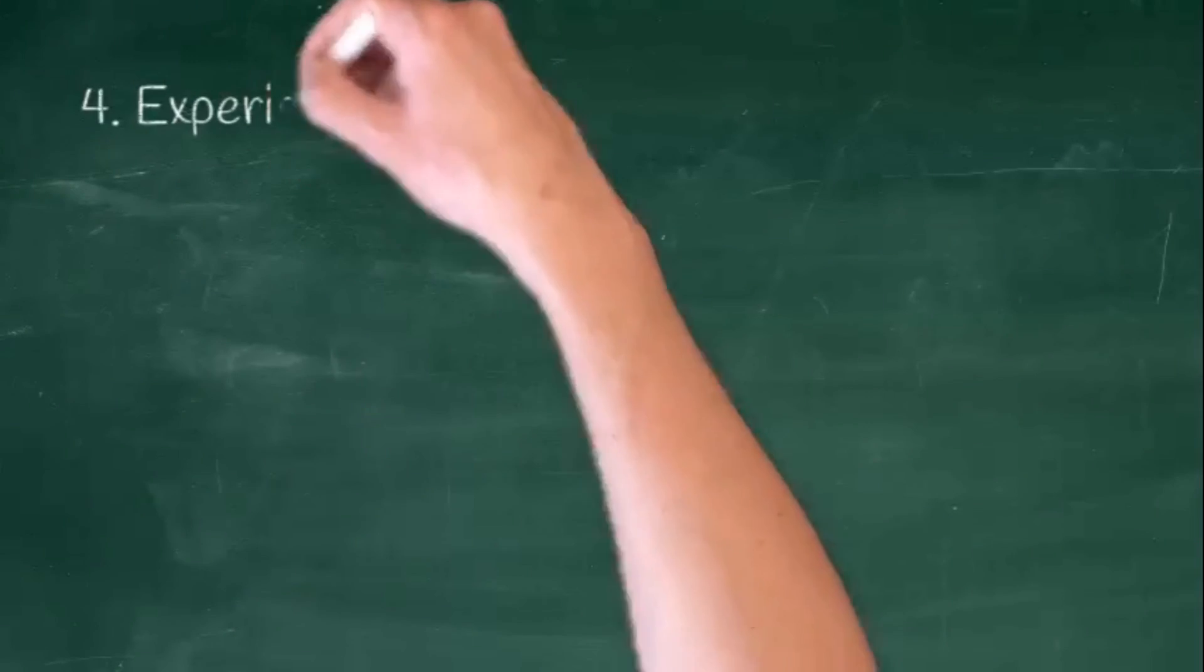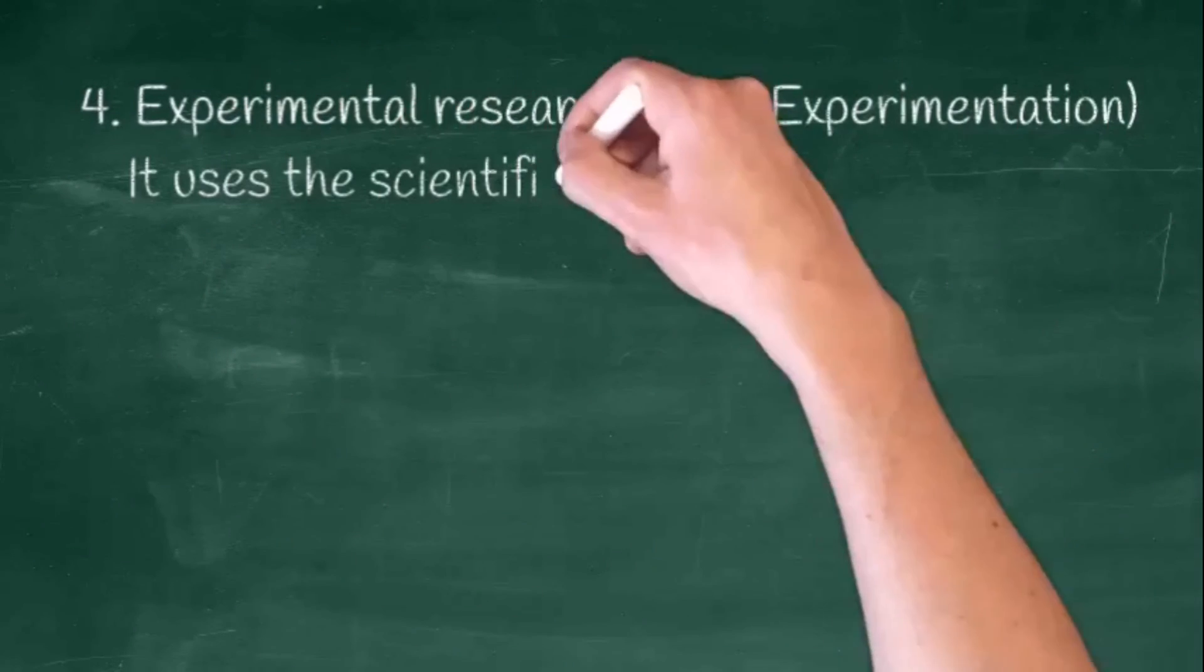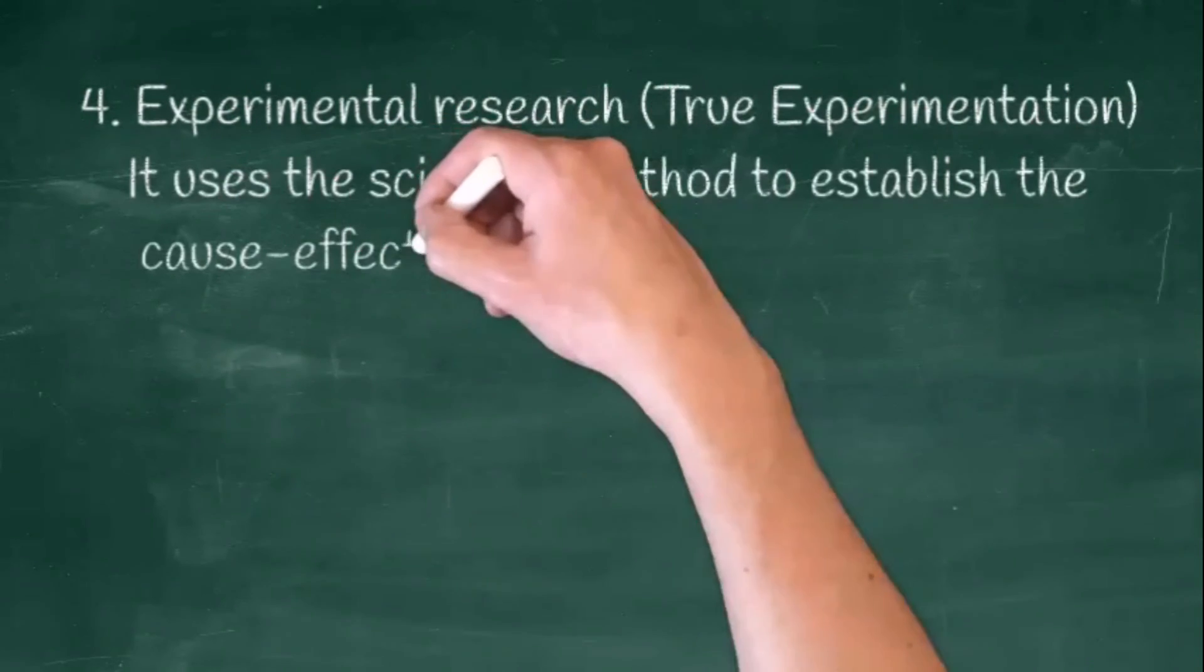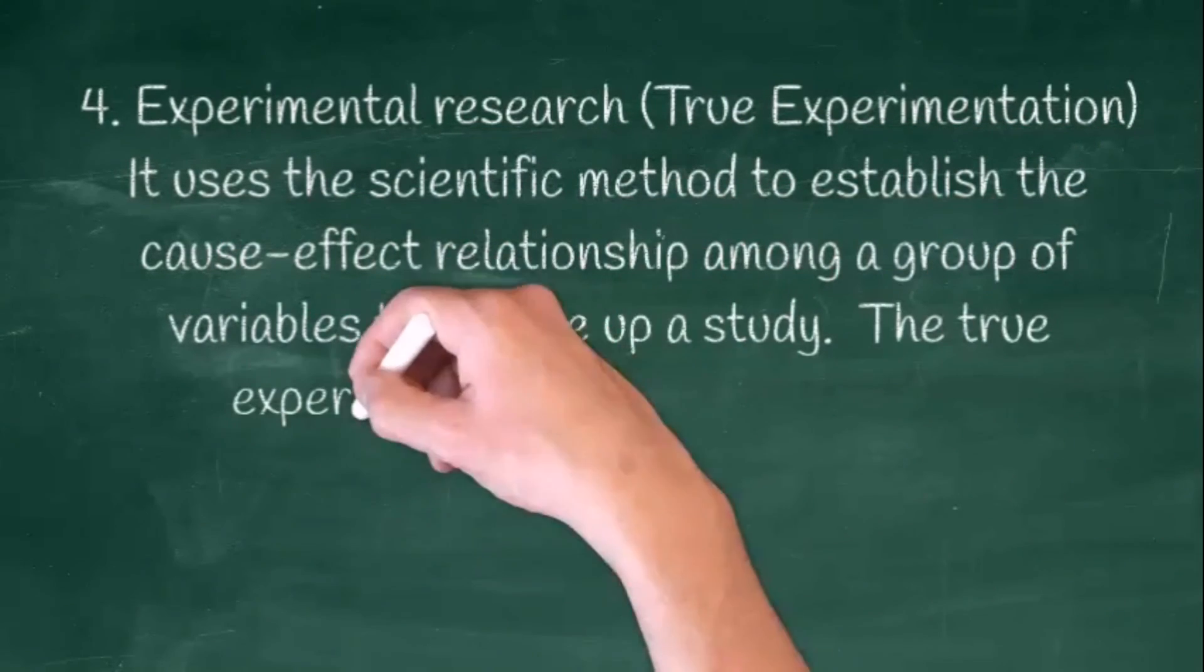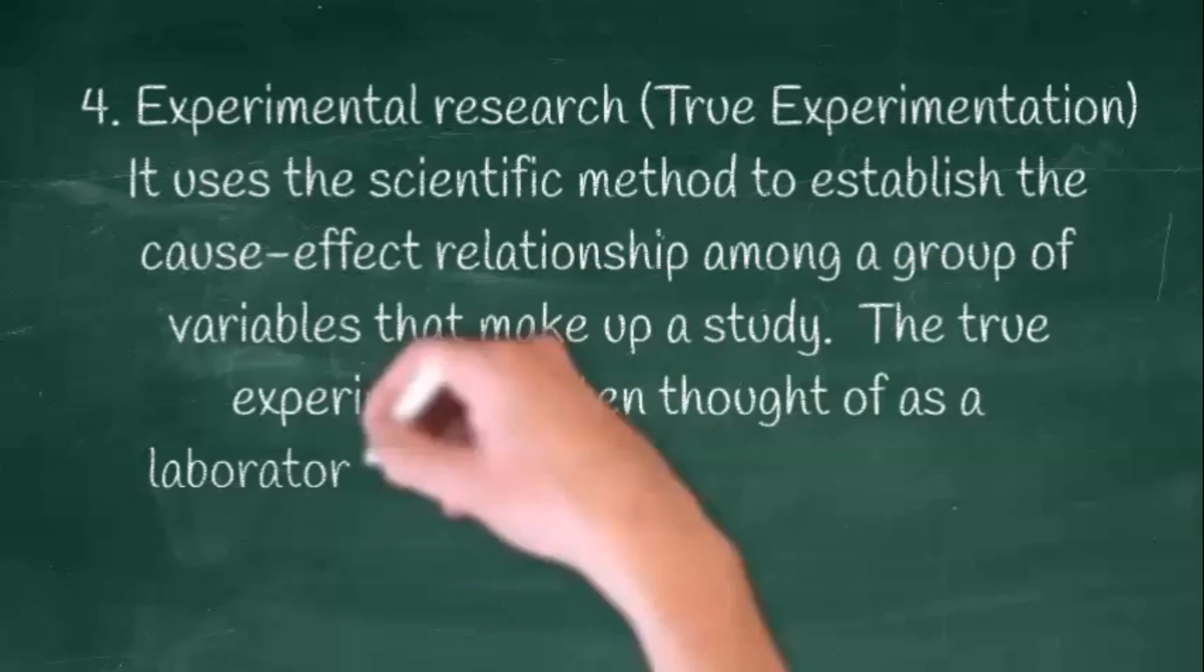Lastly, we have experimental research, or true experimentation. It uses the scientific method to establish the cause and effect relationship among a group of variables that make up a study.